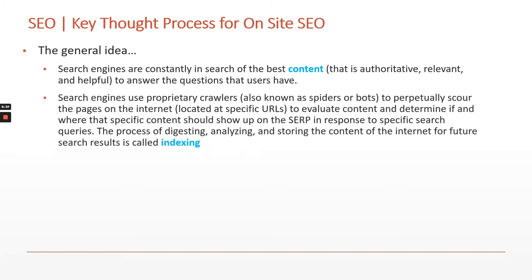To figure out and find where that content is, search engines use these proprietary crawlers, sometimes called spiders or bots. They're the ones that are doing the looking — scouring different pages of the internet at different URLs, or uniform resource locators, which you'd probably think of as the web address, the page.